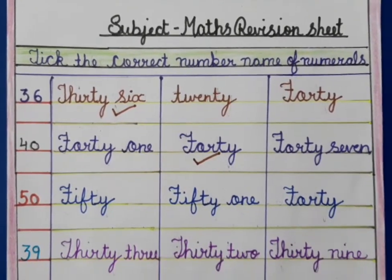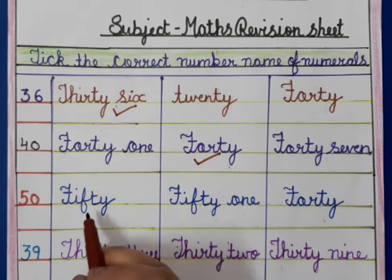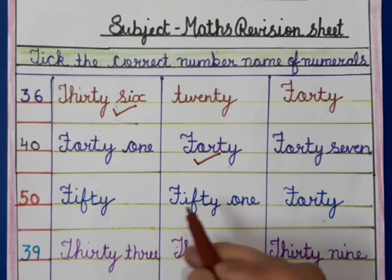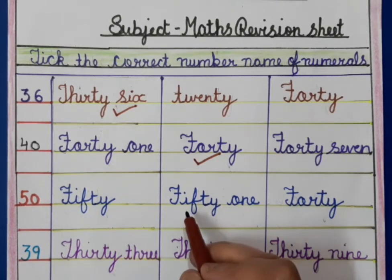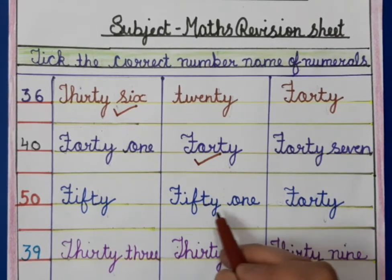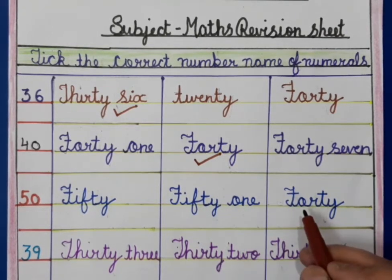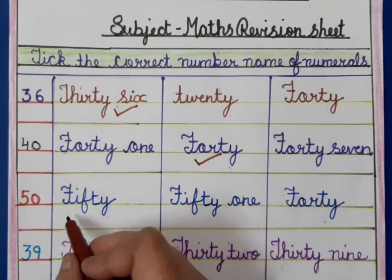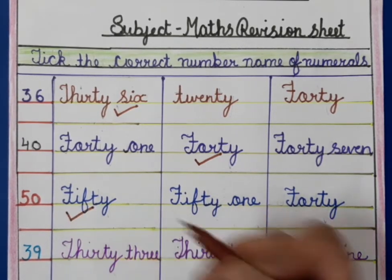This is 50. The options are: FIFTY (50), FIFTY-ONE (51), and FORTY (40). So, 50 is FIFTY — we found it and we will tick it like this.